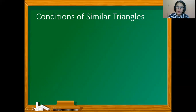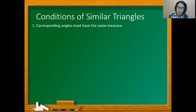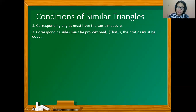How do we describe similar triangles? There are two conditions that must be satisfied: first, corresponding angles must have the same measure; and second, corresponding sides must be proportional — meaning their ratios must be equal.